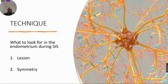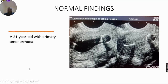In saline infusion sonography, you look for endometrial lesions and also the symmetry of the endometrium. This is a 21-year-old with primary amenorrhea. You can see the catheter balloon, the myometrium, and any myometrial lesions can also be picked. Look at the endometrial cavity — there is no lesion within the endometrium. These are air bubbles during introduction of the fluid. After the procedure you can see the air bubble clearly delineating the endometrial cavity.